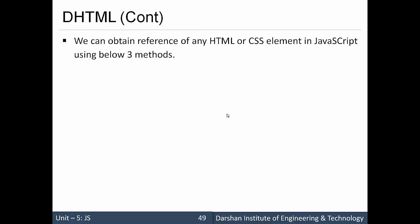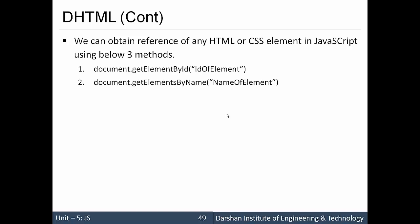We can obtain a reference of any HTML or CSS element in JavaScript using three methods, as we have already learned: document.getElementById, document.getElementsByName, and getElementsByTagName. These are the three methods we can use, as learned in our DOM section.